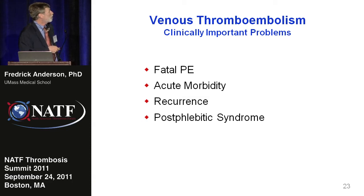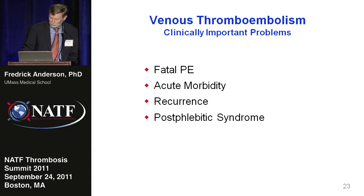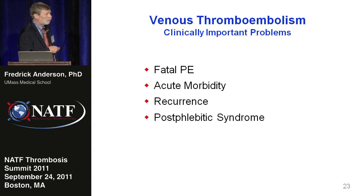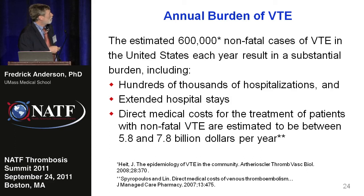A lot of time is spent talking about pulmonary embolism as the target, but there's a much broader morbidity and concern about this disease — including the acute morbidity of DVT and PE, hospitalization, treatment, and perhaps some bleeding if treatment is not managed carefully. Recurrence is fairly common despite good treatment. And then the post-phlebitic syndrome is a really miserable experience for so many people who suffer from it as the long-term consequence of having the valves in their veins damaged by venous thrombosis. The estimated 600,000 non-fatal cases of VTE in the United States each year result in hundreds of thousands of hospitalizations, extended hospital stays, and direct medical costs estimated between $6 and $8 billion per year.